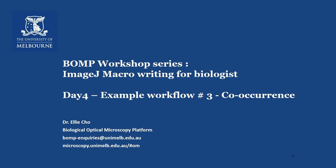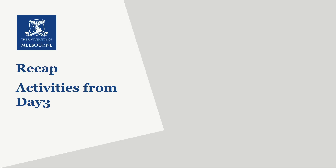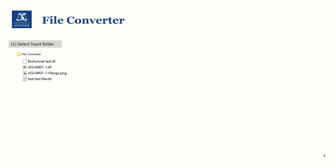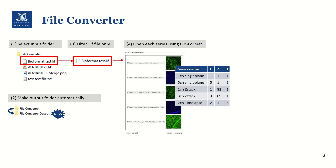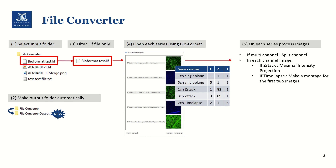Welcome back to Day 4. Just a quick recap on the activities from Day 3. In this file converter script, we have selected the input folder and let ImageJ generate the output folder automatically. And then we have filtered the files based on the filename using two arrays and used the BioFormat plugin extension to open each series. And we have processed images further.